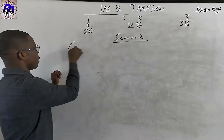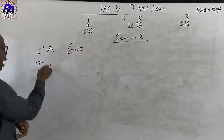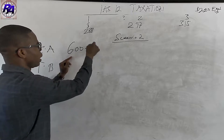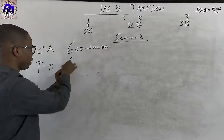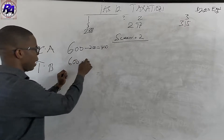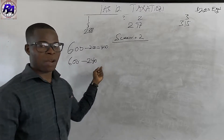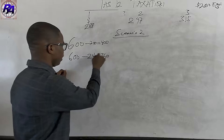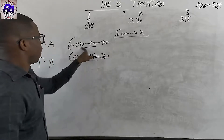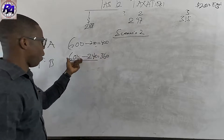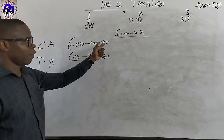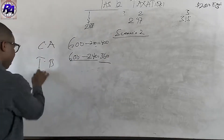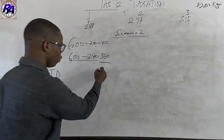In year one, the carrying amount of the asset is 600 minus 200, which gives 400. The tax base is 600 minus the capital allowance of 240, which gives 360. The carrying amount of 400 is bigger than the tax base of 360, so this gives us a taxable temporary difference of 40.